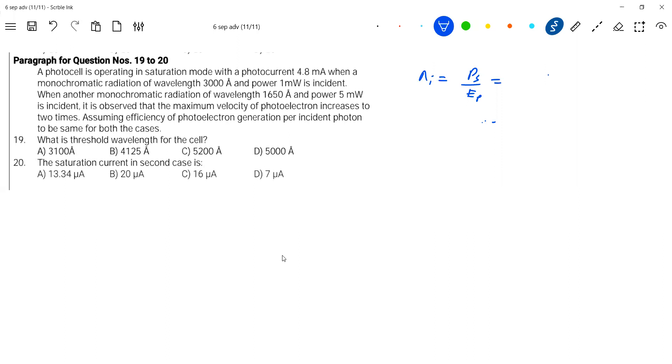Saturation current we know. From this we will come to know the number of photoelectrons. So now you know number of incident photons and number of photoelectrons. Can we calculate efficiency?